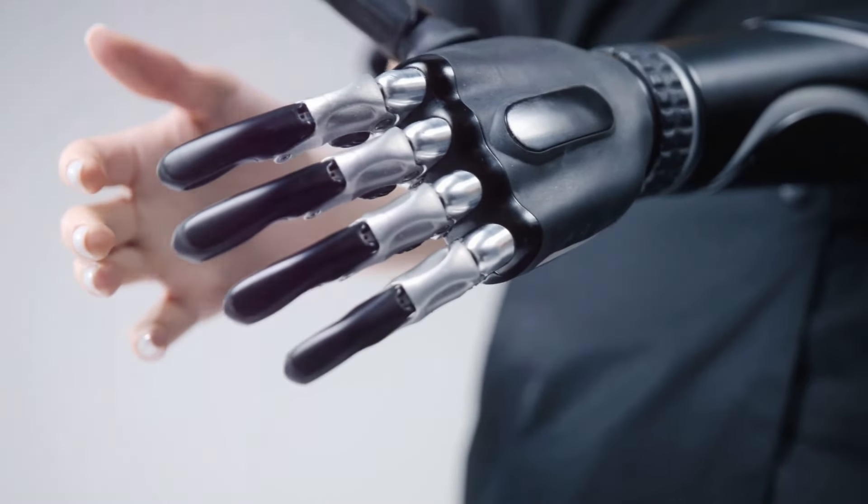At the heart of Neuralink's technology lies a tiny implantable chip that contains thousands of microscopic electrodes. These electrodes are designed to be inserted into the brain with incredible precision, allowing them to record and stimulate the activity of individual neurons. The potential applications of this technology are vast and varied.